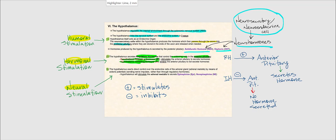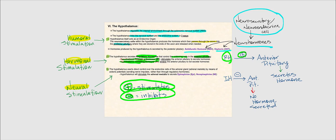The hypothalamic-releasing hormones stimulate the endocrine cells found in the anterior pituitary — a plus symbol indicates stimulation — so those cells will secrete hormones. If the hypothalamus releases inhibiting hormone, it does the opposite: it inhibits the endocrine cells of the anterior pituitary, so those cells will not secrete hormones. This is referred to as hormonal stimulation.